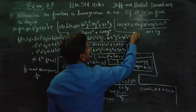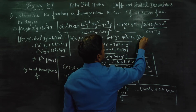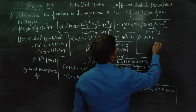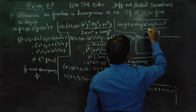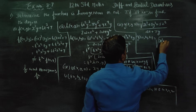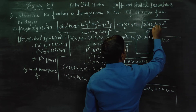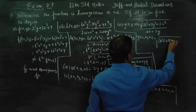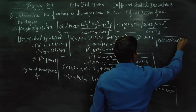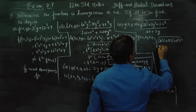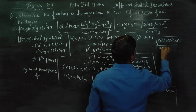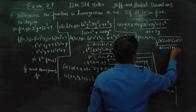We start with g of tx, ty, tz equal to the square root of 3t squared x squared plus 5t squared y squared plus 5t squared z squared, all divided by the root of 4tx times 7ty.